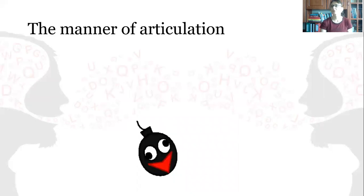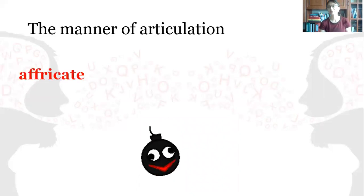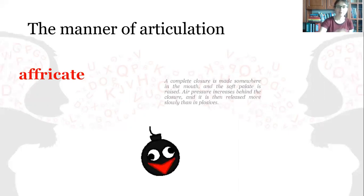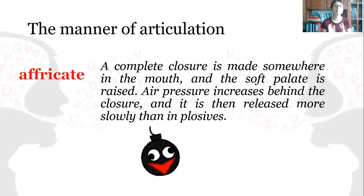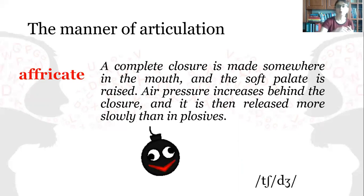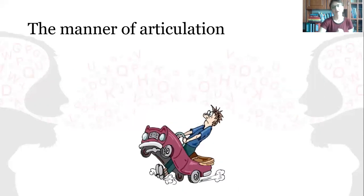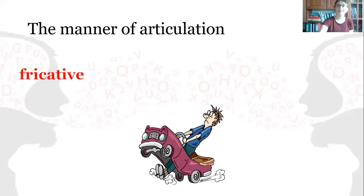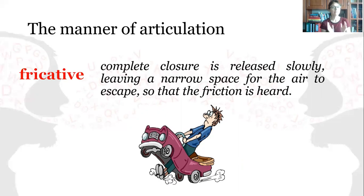What about this next picture? It is meant to represent the affricates in English. There is a complete closure somewhere in the mouth, the soft palate is raised, air pressure increases behind the closure, and then it is released more slowly than in plosives. The next picture represents the fricatives in English — again there is closure, but it is released slowly, leaving a narrow space for the air to escape, and we can hear the friction.